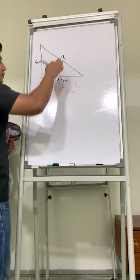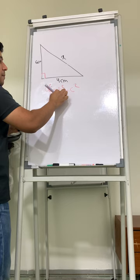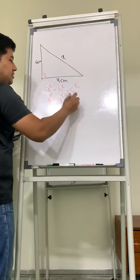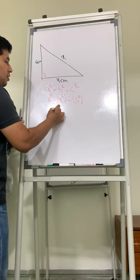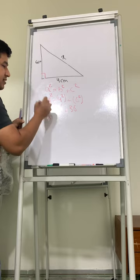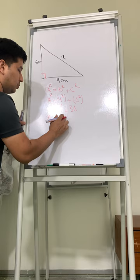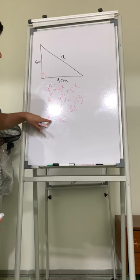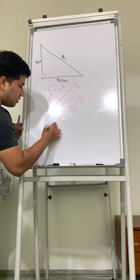So X square is equal to 16 plus 36, which is equal to 52. Remember that when you reach the end with a square root, we can write it as X is equal to square root of 52.